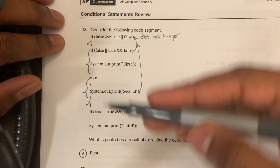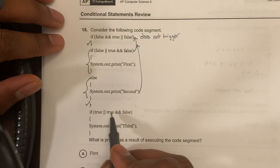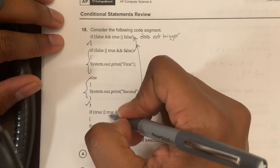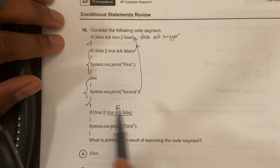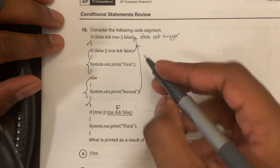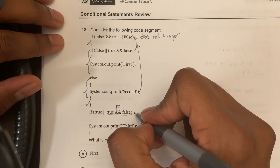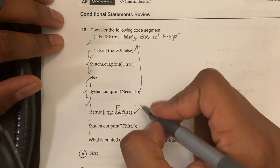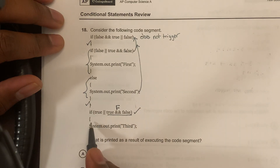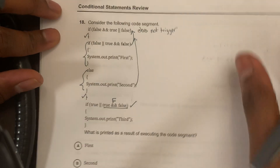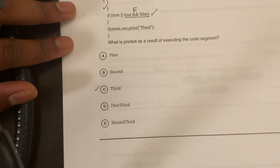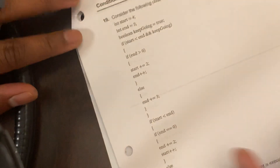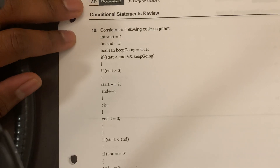We jump down to the other if statement: if true or true and false. True and false is a false statement, but true or false is true. So this if statement is triggered, and whatever happens inside those braces executes. The only output we get is 'third'.